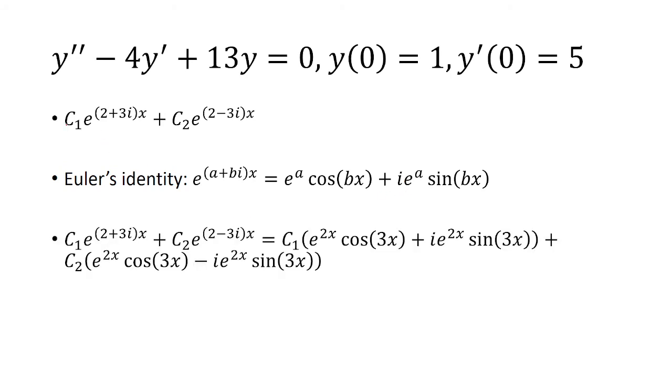I'm going to take my solution here and rewrite it using Euler's identity. For the first term we have a = 2, b = 3. Second term we have a = 2, b = -3. And this is the expression that we get.